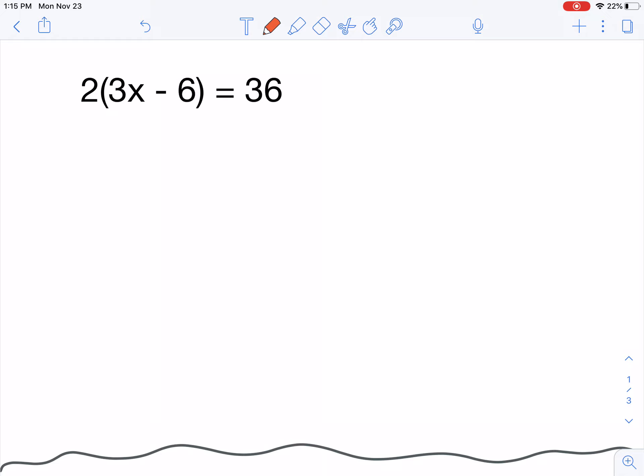So in this first example, you'll notice that you see parentheses around a set of terms. This equation says 2 parentheses 3x minus 6, close the parentheses, has to equal 36. So this means that I need to multiply 2 by everything inside my parentheses by the quantity of 3x minus 6.